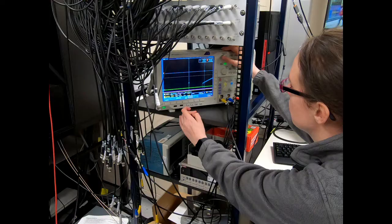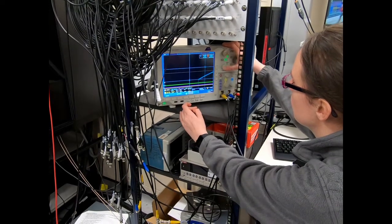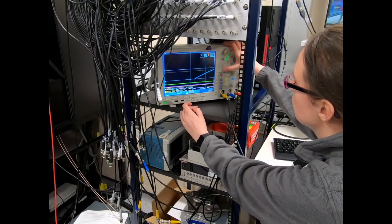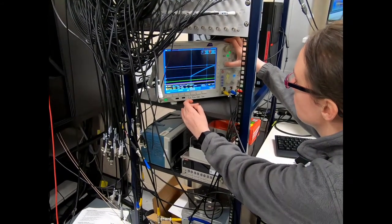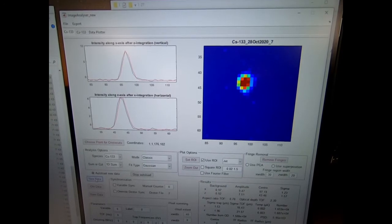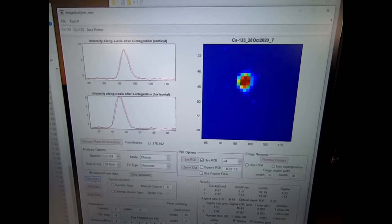We run the experiment repeatedly, each time adjusting laser or magnetic field parameters. This allowed us to improve our cooling procedure to the point that we can now produce Bose-Einstein condensates of either cesium or rubidium atoms.